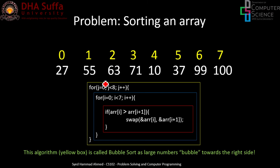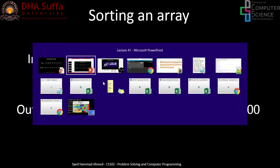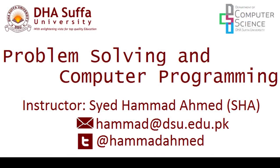We started with the smallest sub-problem and designed this algorithm ourselves. This algorithm is known as bubble sort. The reason it's called bubble sort is that the larger numbers are bubbling towards the right side of the array. Do read the book regarding bubble sort — the code and explanation are given. Take care, goodbye, and best of luck for the exam.